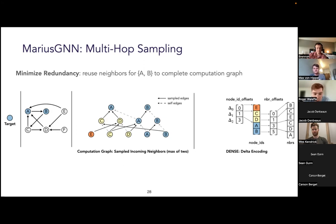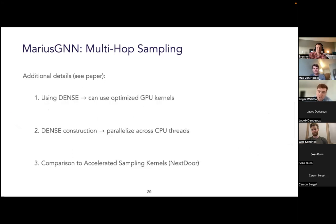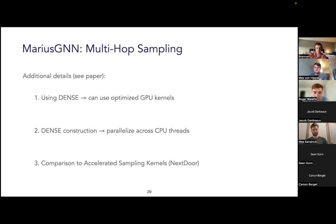The final delta (delta 0) containing node E is only needed as input to the first GNN layer and doesn't require any neighbors. DENS is amenable to optimized GPU computation kernels and has parallel algorithms for high-performance CPU construction. Interestingly, compared to specialized optimized kernels developed in NextDoor for GPU-based sampling, the sample reuse in DENS actually scales better with respect to the number of GNN layers, ultimately outperforming some optimized sampling implementations for three- and four-layer GNNs.